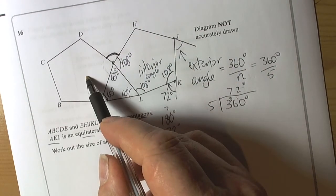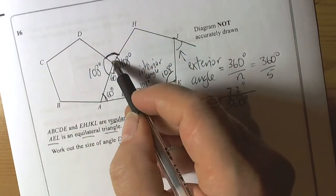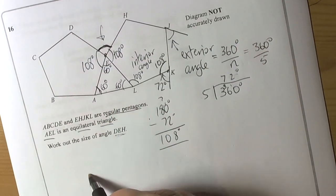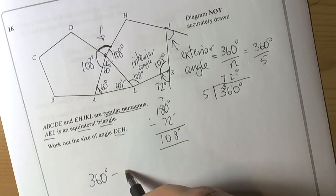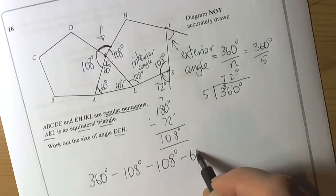This is a pentagon. This is the same pentagon. So we know this angle here is 108 degrees. Angles around the point add up to 360.